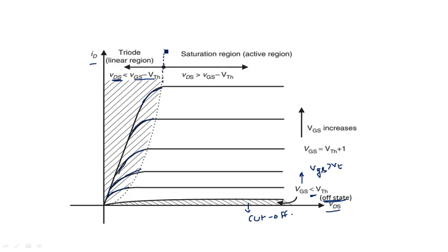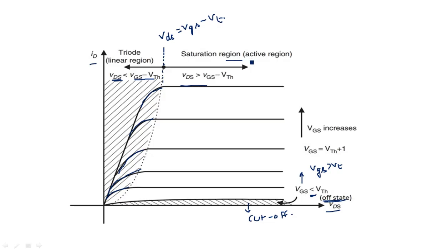When VDS slowly increases and touches the point VGS minus VT, the transistor enters into saturation region. Beyond that voltage, even if you increase the voltage, the current will not increase — current becomes constant. All these characteristics show constant currents as VDS increases beyond VGS minus VT, and the transistor enters into saturation region, which is also known as active region. These are the characteristics of the NMOS transistor in the enhancement mode.